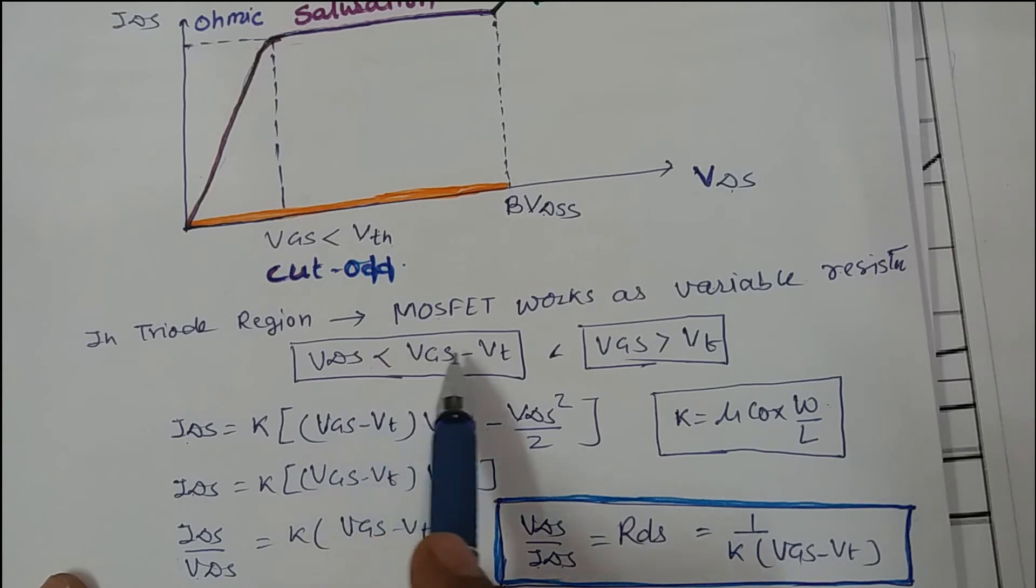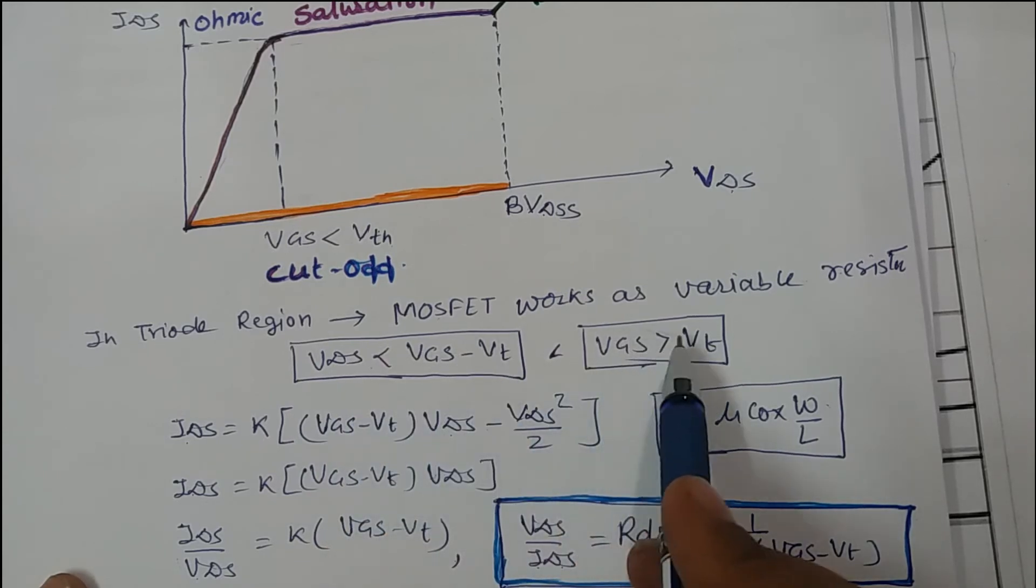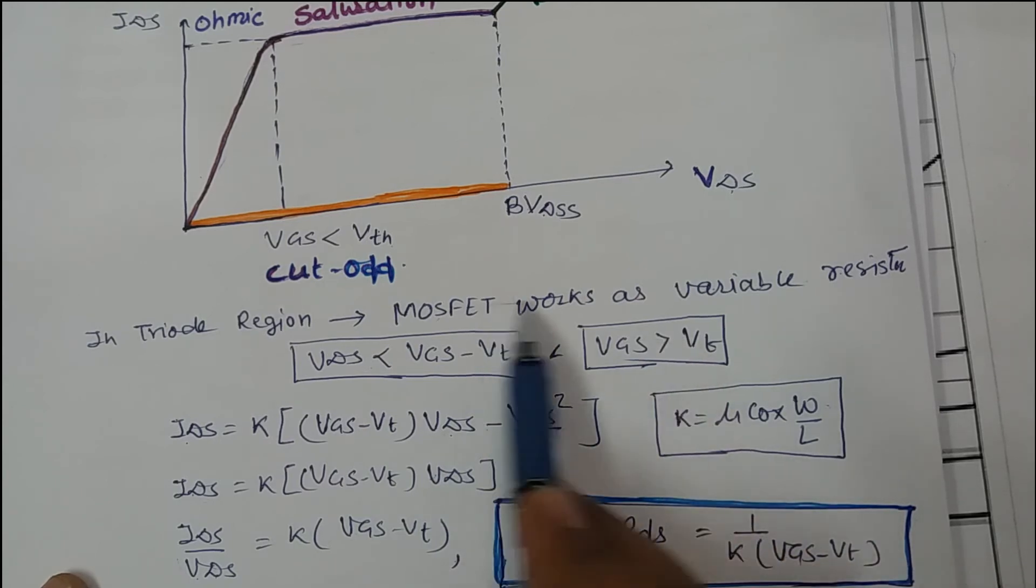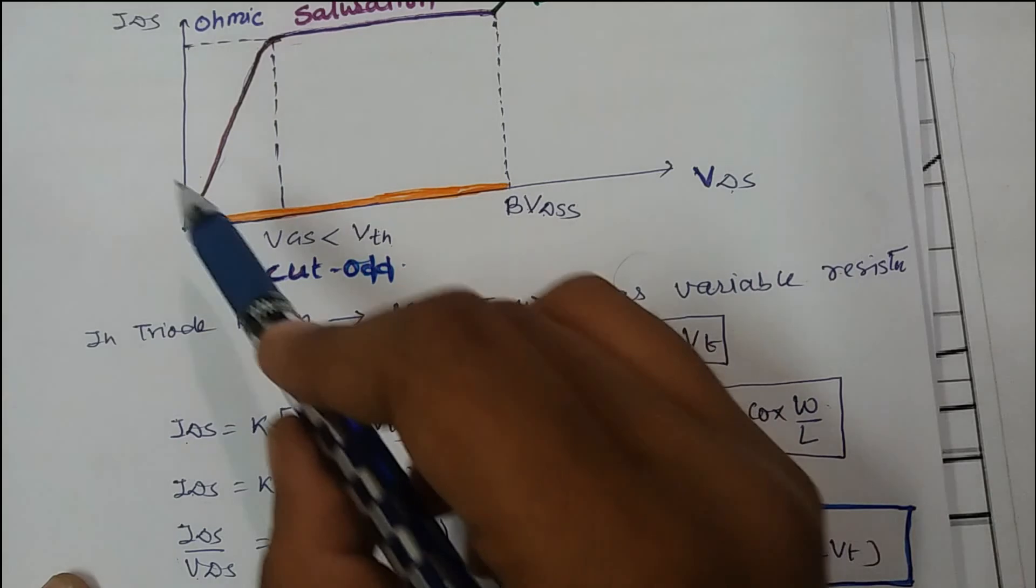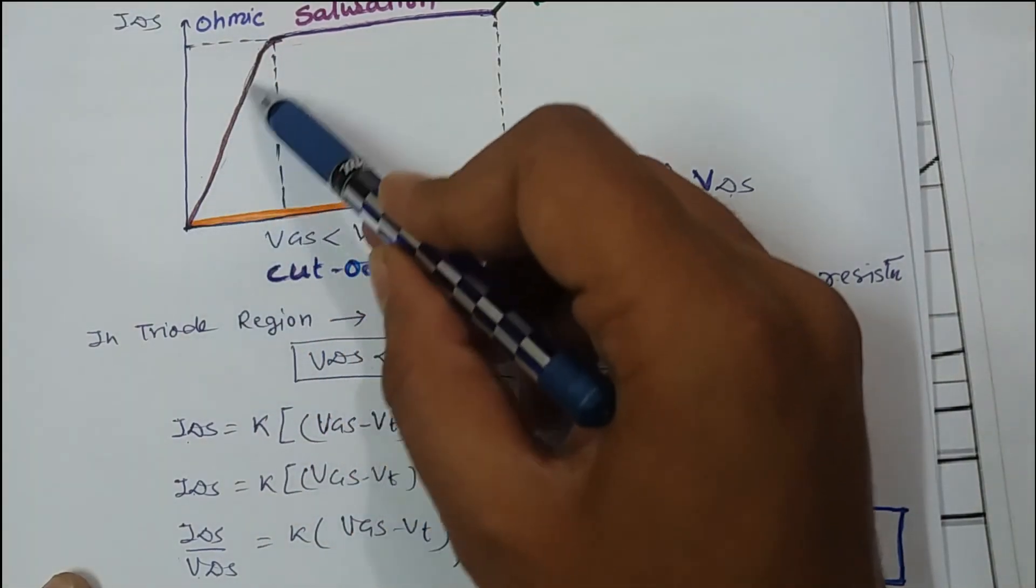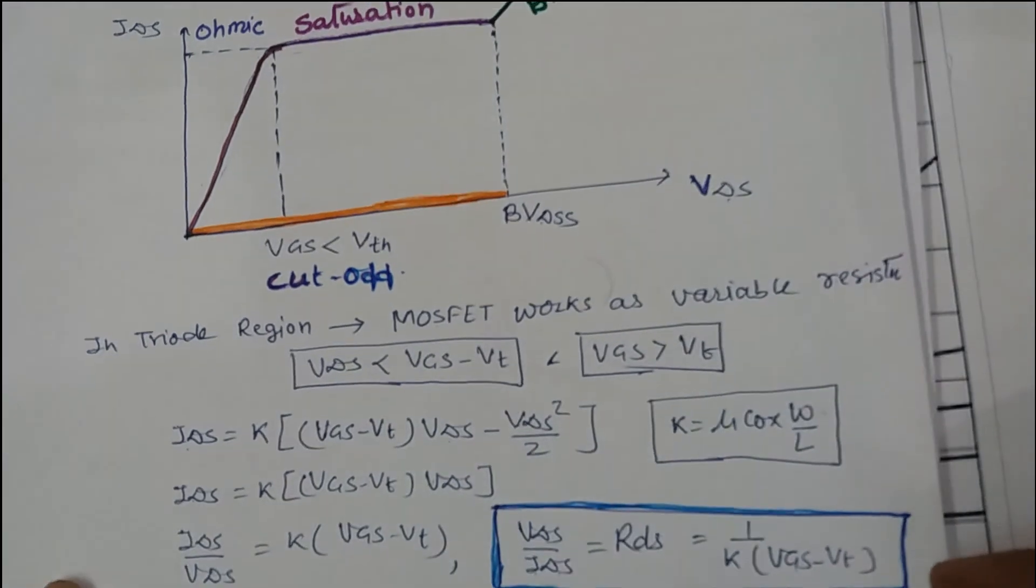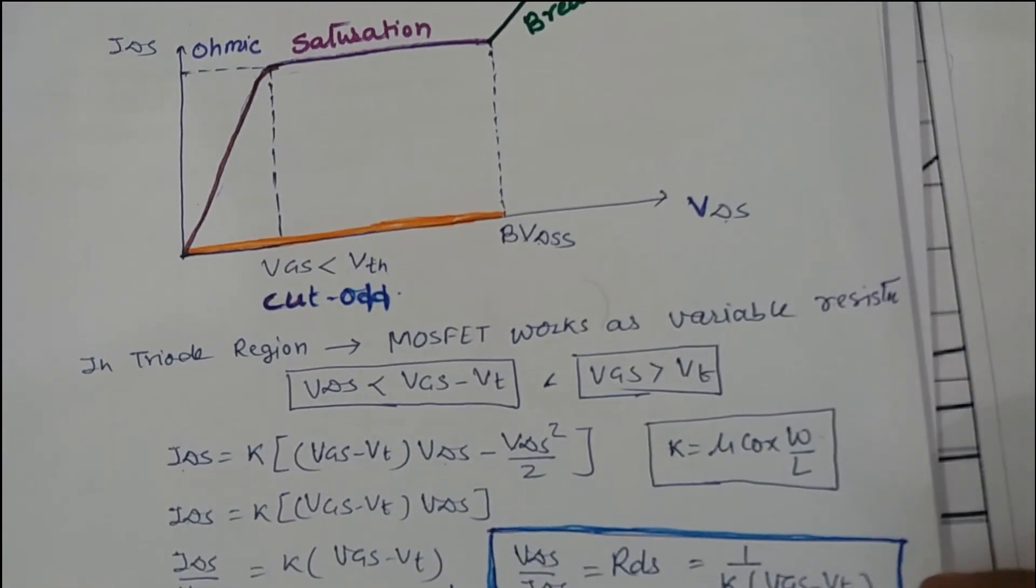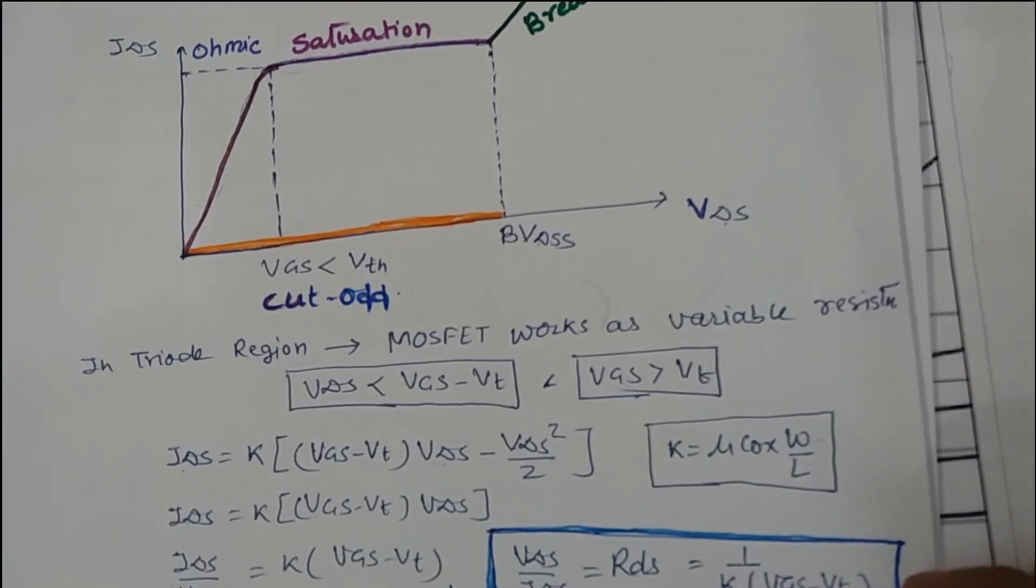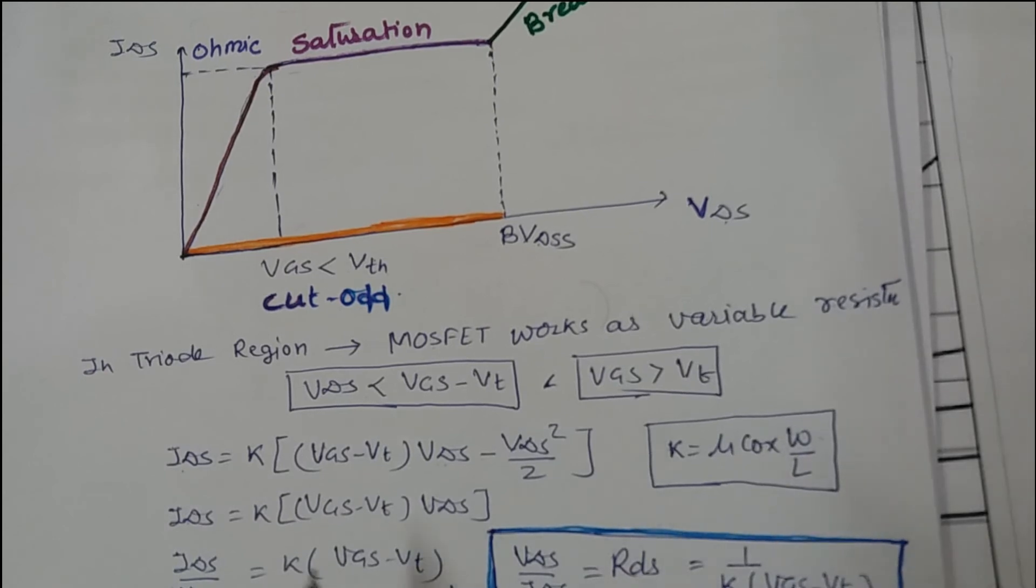When VDS is less than VGS minus VT and VGS is greater than VT, MOSFET enters in ohmic triode region where MOSFET works as a variable resistor. You can have a look over here, this is the ohmic triode region where MOSFET works as a variable resistor.